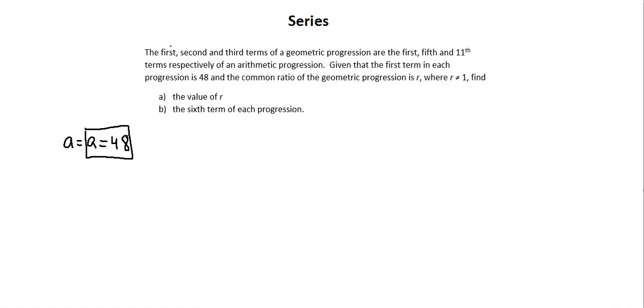My second equation: I see that the first of each series go together. I also see the second of the geometric goes with the fifth of the arithmetic. So the second term of a geometric series is a times r to the power of 2 minus 1, and the fifth series of an arithmetic progression is a plus quantity n minus 1 times d. Here, my n is going to become 5, and I can simplify this equation to ar equals a plus 4d.